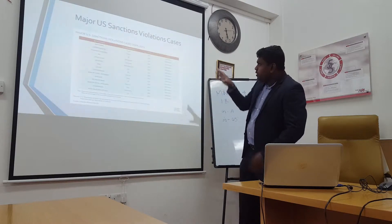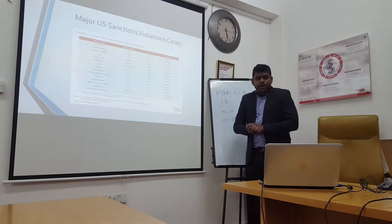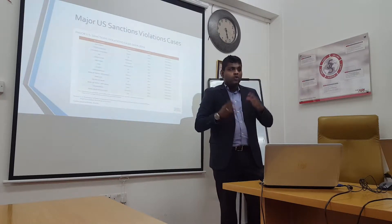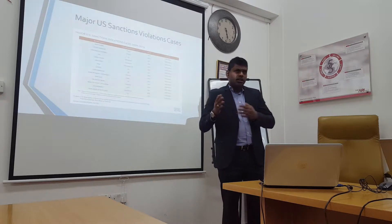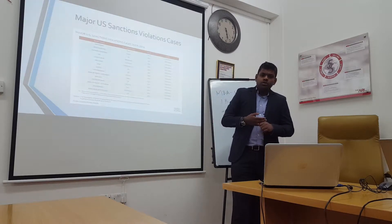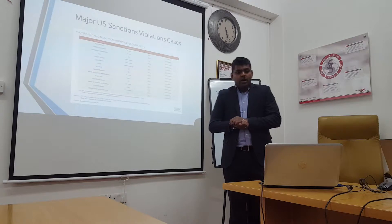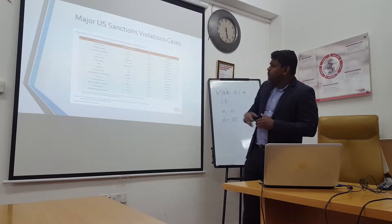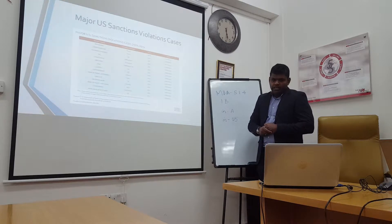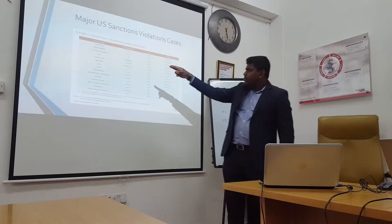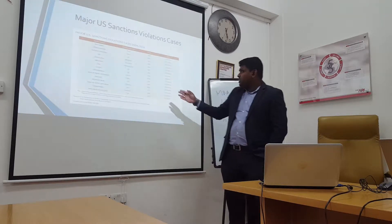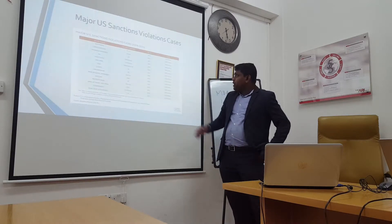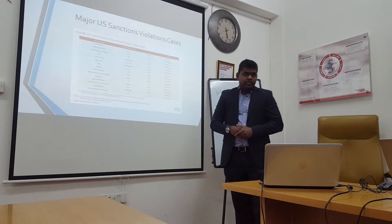This chart is important because there have been many past incidents of sanction violations. If a sanction violation occurs, the institution involved is subject to high fines. This chart indicates major U.S. sanction violation cases. The highest case involved BNP Paribas of France, which was fined USD 8.9 billion for sanction violations.